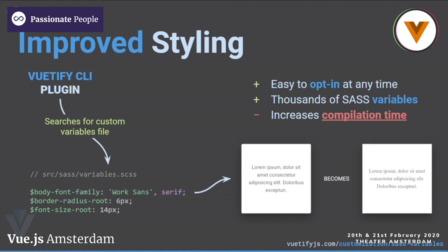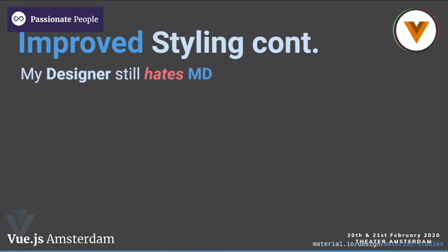We added thousands of SASS variables in our last version. The only downside is the initial compilation time, because Vue CLI transpiles the dependencies in node_modules. This allows better tree shaking for our styles, but it does come at the cost of some initial compilation time. We are working on that right now and have a more solid solution planned for version 3.